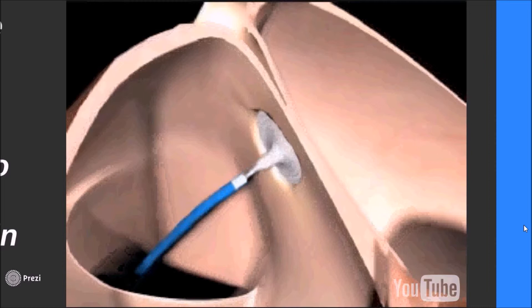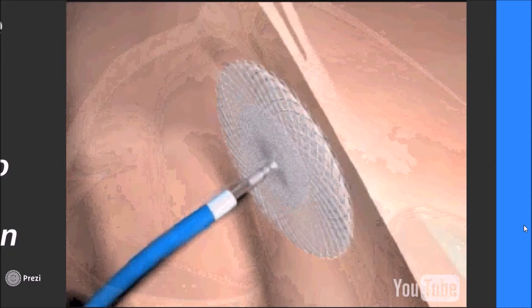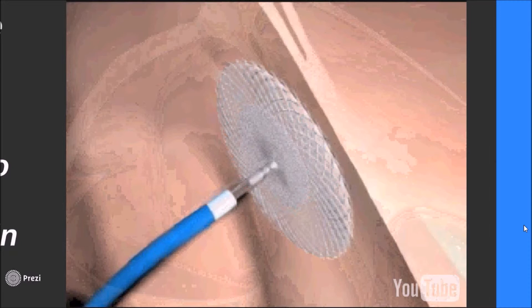Once the device is secured, the defect is fully covered. The position is confirmed, flow is restored, and the cable securing the device to the catheter is released. The catheter is then removed. The device stays in place for the life of the patient — it gets embedded into the heart structure, and tissue grows over it so it becomes part of the heart muscle.